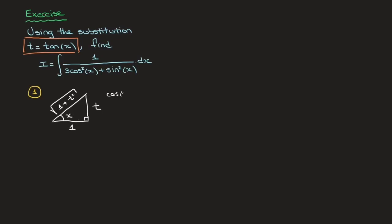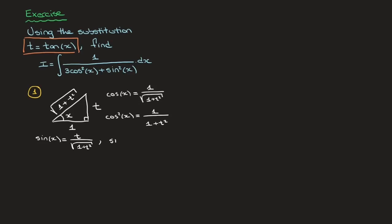Now we can find expressions for cosine of x and sine of x in terms of t. Since cosine of x equals adjacent over hypotenuse, that's 1 over the square root of 1 plus t squared. So cosine squared of x equals 1 over 1 plus t squared. Similarly, sine of x equals opposite over hypotenuse, which is t over the square root of 1 plus t squared. So sine squared of x equals t squared over 1 plus t squared. We've now rewritten both cosine squared of x and sine squared of x in terms of the new variable t.